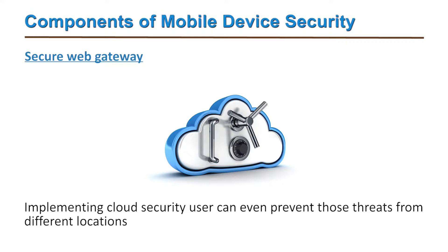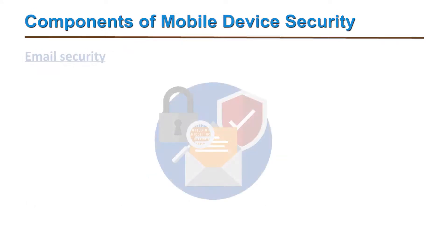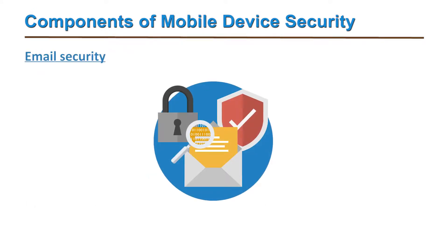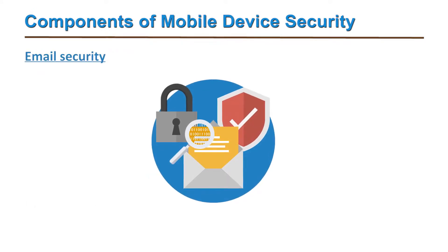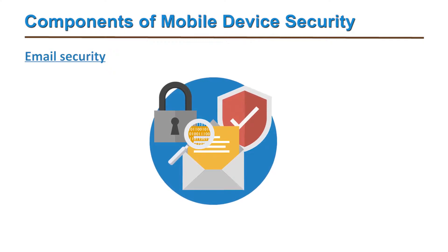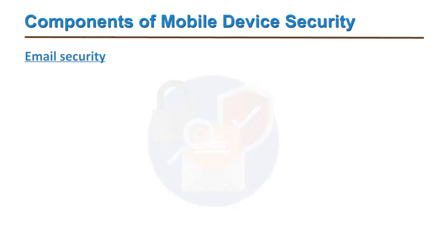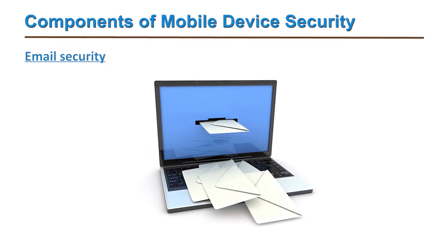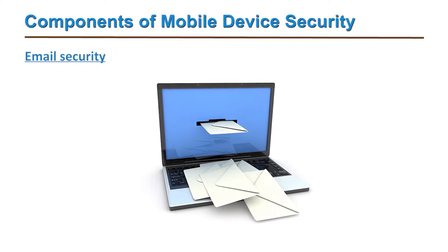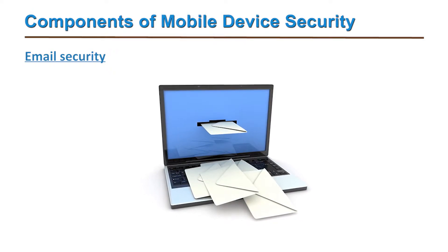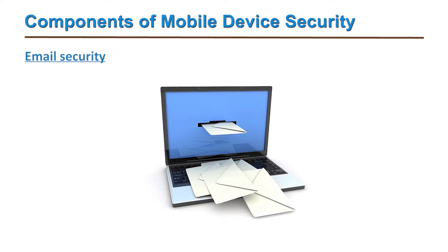Implementing cloud security from both the user's and the organization's perspective can prevent threats from different locations. The fourth component is email security. Major organizations communicate to users and employees only via email, making this component very important.